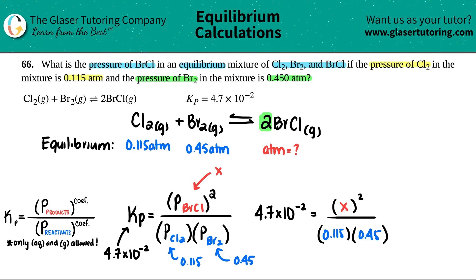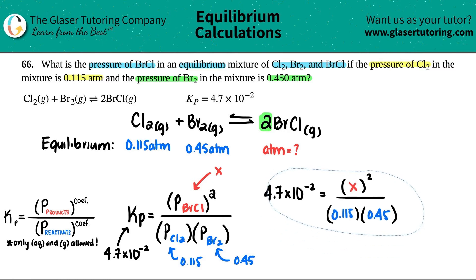For the sake of space on this video I'm going to cross multiply. When we cross multiply it's 4.7 × 10⁻² times all of this. You can find out the number for this and then cross multiply but we'll get the same answer.